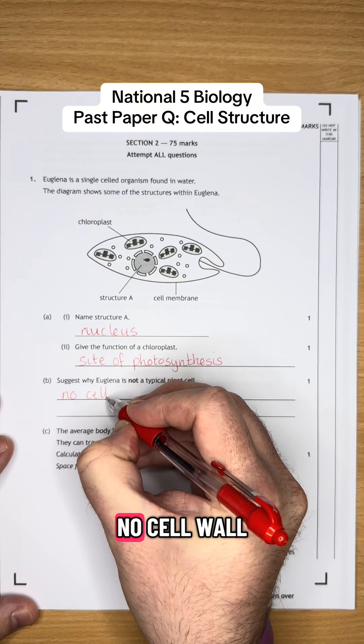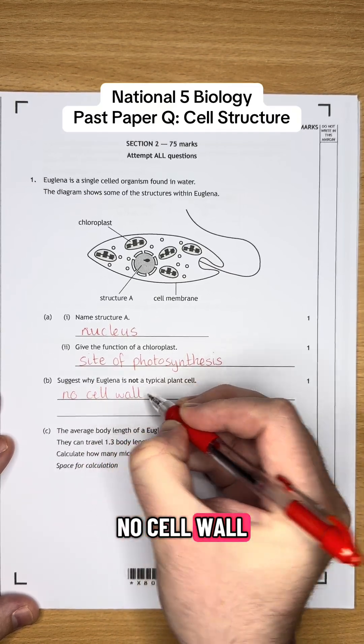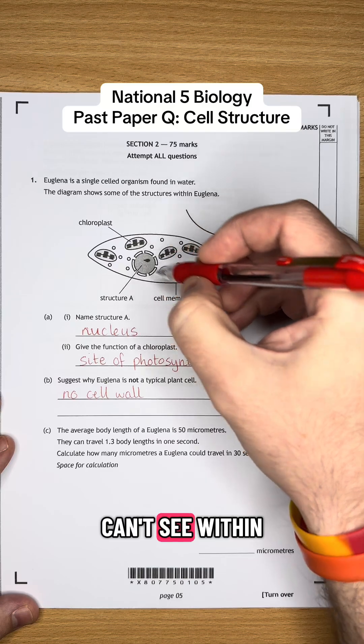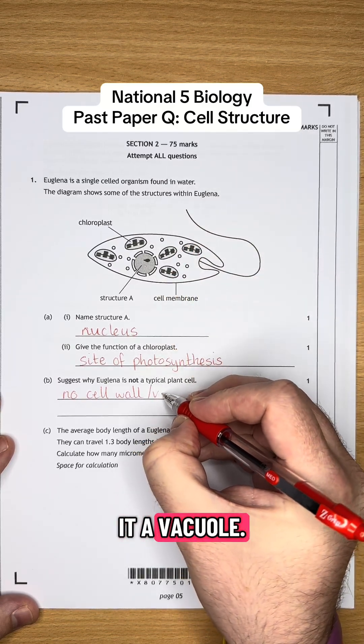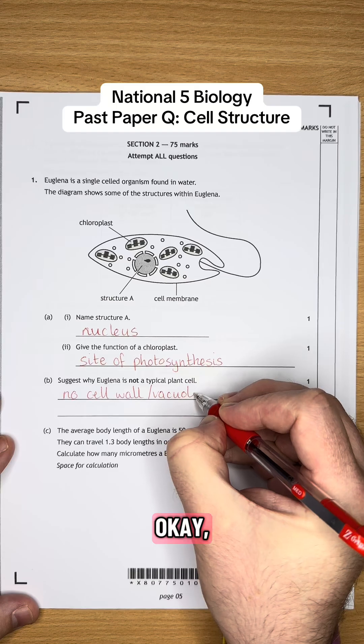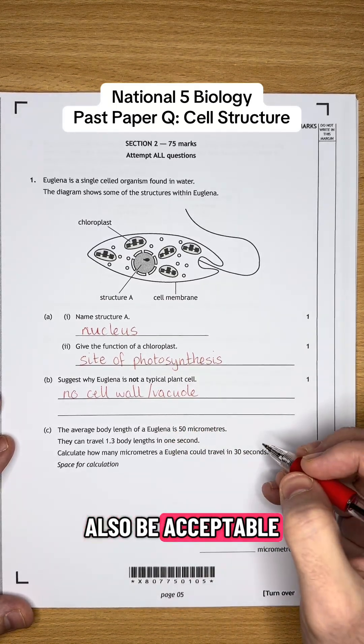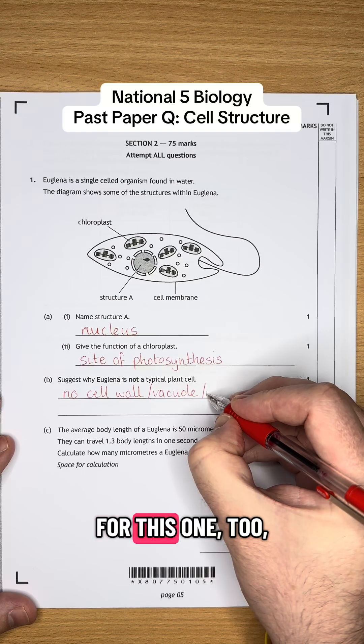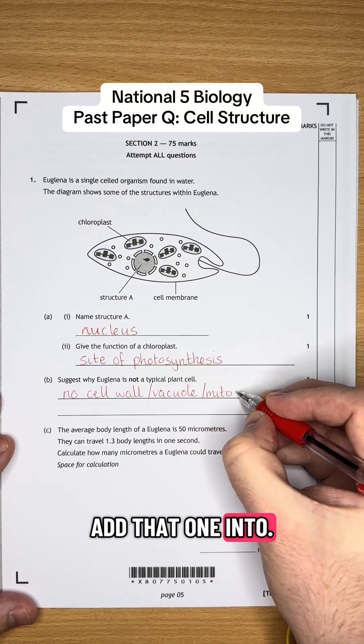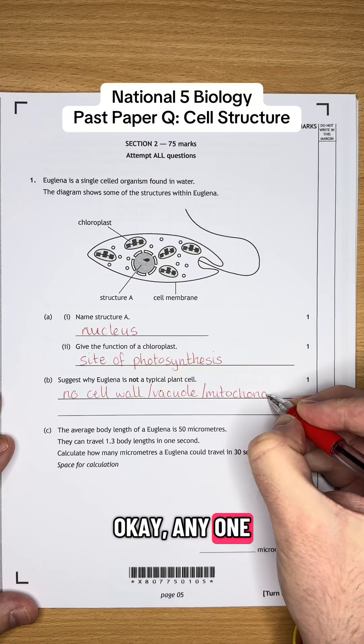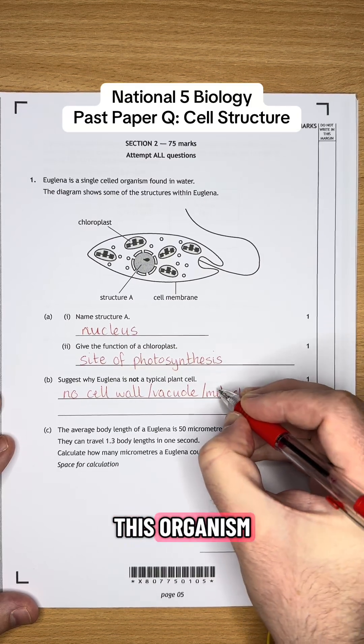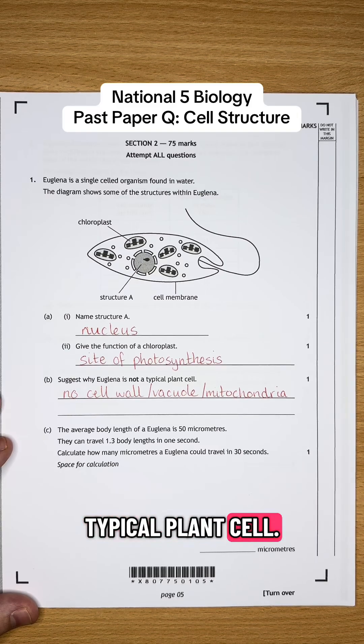Okay, so it has no cell wall around it. And also I can't see within it a vacuole. Now it would also be acceptable to mention mitochondria for this one too. So we'll just add that one in too. Any one of these three is missing from this organism that we would find within a typical plant cell.